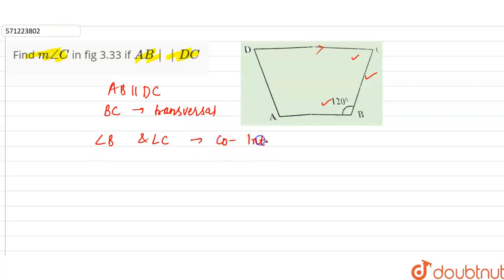These are two co-interior angles and sum of two co-interior angles are 180 degrees. So we can say angle B plus angle C is equal to 180 degrees.